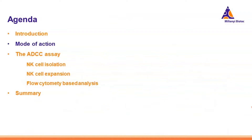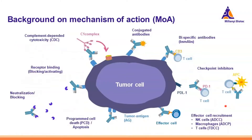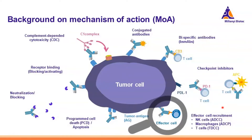Next, I will focus on the mode of action. This slide looks really crowded, but the key point is that antibodies have different mechanisms of action. These include neutralizing different particles or acting via the complement system, or by specific antibodies or checkpoint inhibitors. In this webinar, we are looking at the part where antibodies are able to recruit effector cells such as NK cells, macrophages, or even T cells — and today, NK cells will be the focus.